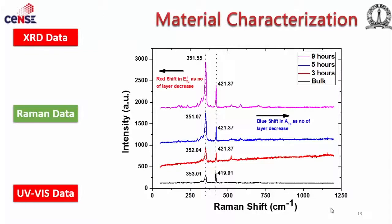In the Raman spectra, we see Raman active modes E¹₂g and A₁g, corresponding to in-plane and out-of-plane vibrations. The ratio of E¹₂g to A₁g intensity increases as we go from bulk to few layers, which is well reported in literature. Since E¹₂g is in-plane vibration, removing stacking by cutting to few layers decreases out-of-plane and increases in-plane contributions. A blue shift and red shift are also observed — another signature confirming reduction to few layers.